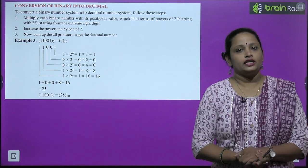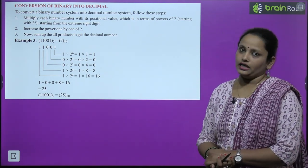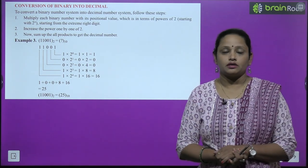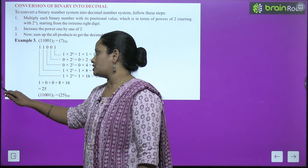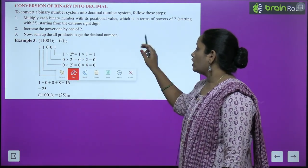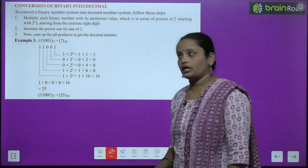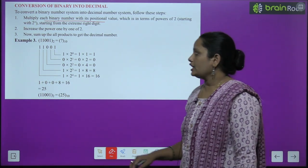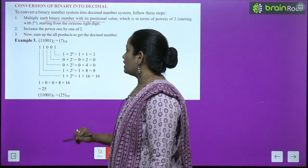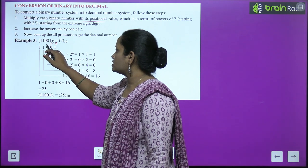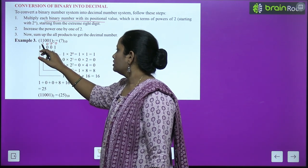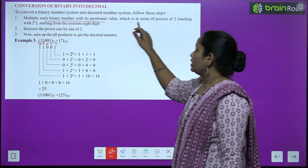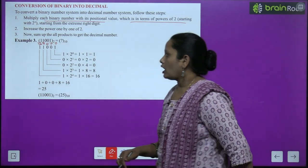Conversion of binary into decimal — how do we convert binary to decimal? To convert a binary number system into decimal, follow these steps: multiply each binary digit with its positional value, which is a power of 2 — 1, 2, 4, 8, 16 and so on — starting from the rightmost digit with power 0 and increasing the power one by one.